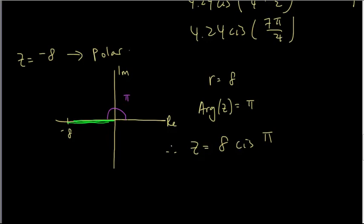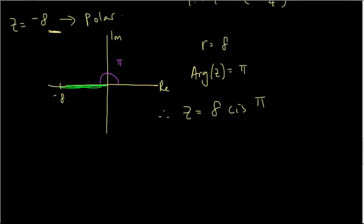When doing polar forms, the complex number doesn't always have to have an imaginary part — this can be done with just a real number too. Note that this could also be written as 8 cis(-pi), because going from the positive real axis clockwise to the negative real axis is -pi. So 8 cis(pi) and 8 cis(-pi) are equal and interchangeable. I hope you guys understand — if you have any questions, feel free to ask on the discussion board and I'll get back to you as soon as possible.